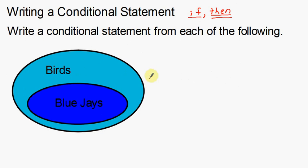I'm going to come up with an if-then statement with a hypothesis and a conclusion. When we look at these Venn diagrams, we want to look at the middle — kind of from the middle out. In the middle we have the blue jays, so that gives you a hint on where to start. We're going to start with the blue jays. But it's a little difficult — I can't just say 'if a blue jay'; that doesn't really make a lot of sense.